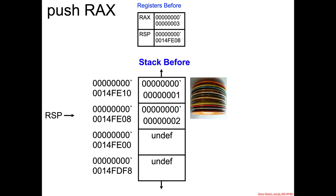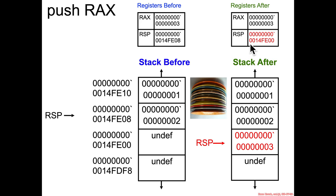What would the push instruction actually do when executed? Let's say we have push rax, where rax holds the value 3, and RSP is pointing at address 14fe08. After executing push rax, the RSP value changes from 14fe08 to 14fe00, because the stack pointer is automatically decremented by 8. RSP is now pointing at the top of the stack, which holds the value 3 that was just pushed.